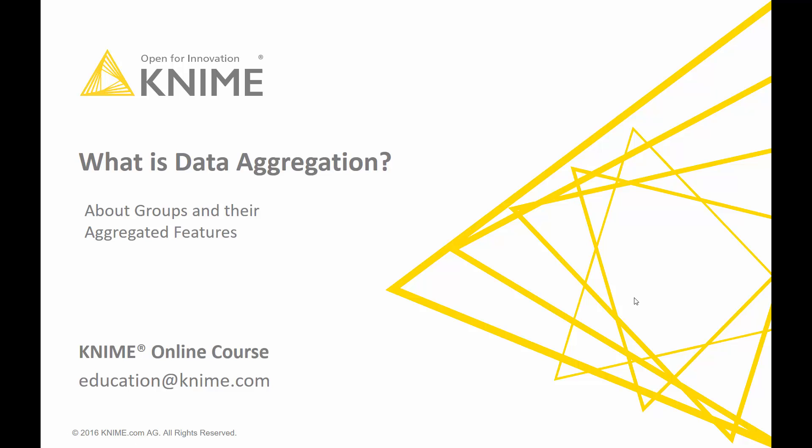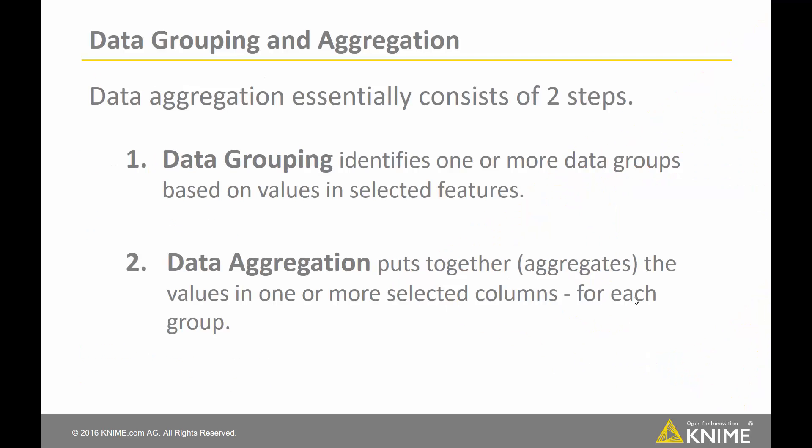This video explains what data aggregation is. Data aggregation essentially consists of two steps. First, the data grouping identifies one or more data groups based on values and selected features. Then, the data aggregation puts together the values in one or more selected columns for each group.